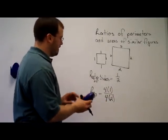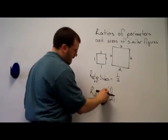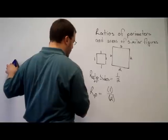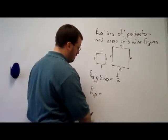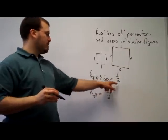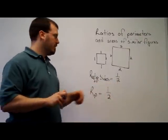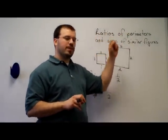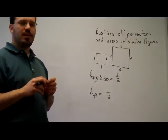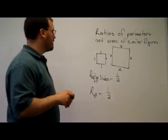Well, since we have 4 over 4, that cancels, and our ratio of the perimeters is just 1 over 2, or the same as the ratio of the sides. So finding the ratio of perimeters is actually fairly easy when you have similar figures. It's just exactly equal to the ratio of sides.